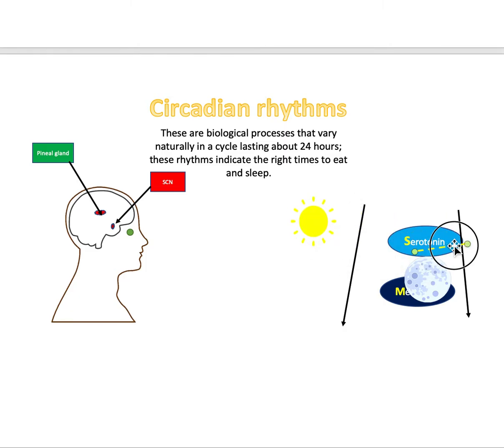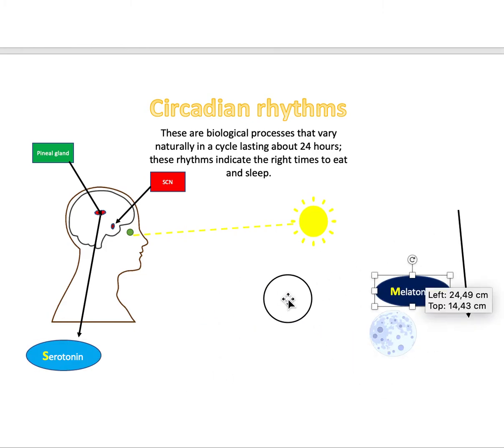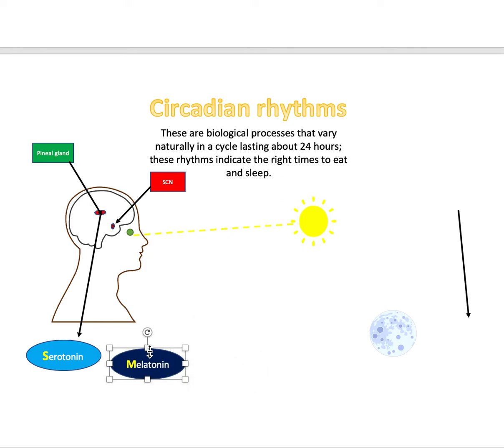So to visually explain it, when light is perceived, when you wake up in the morning or in the day, the SCN will tell the pineal gland—the SCN is sort of like the boss—it will tell the pineal gland, okay, make a hormone that will wake him up. The hormone that will wake people up is serotonin.